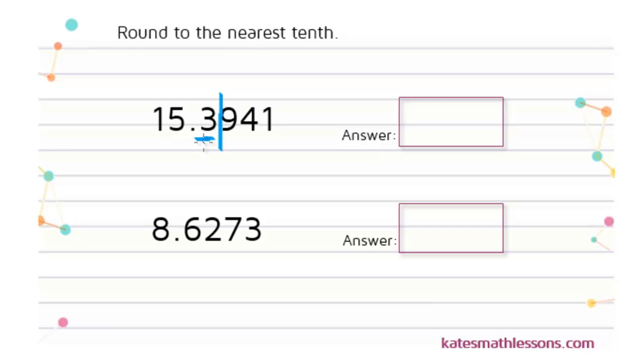In order to tell whether to keep it the same or to round it up you look at the number after it. This has a 9 after it.